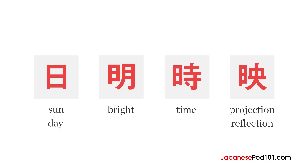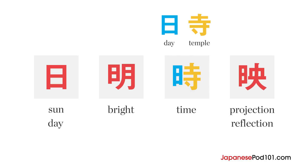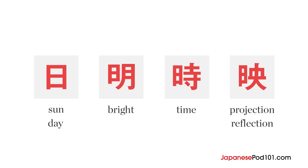The next kanji has the day radical on the left and the character for temple on the right. In historic times, the time of day was announced by chiming a large bell at the temple. So day and temple together means time.